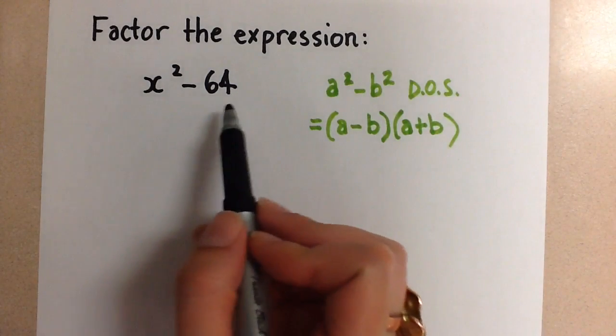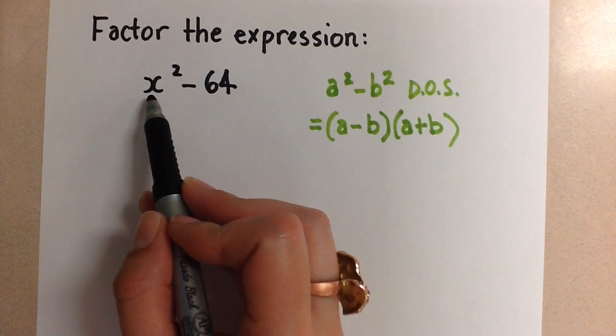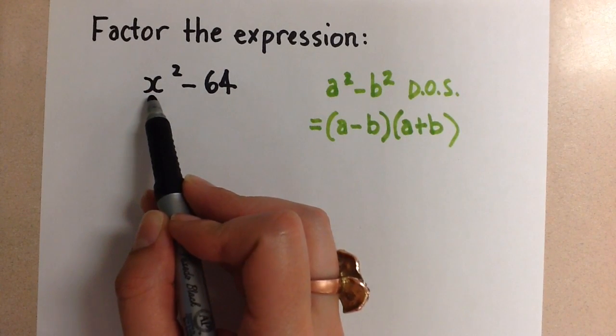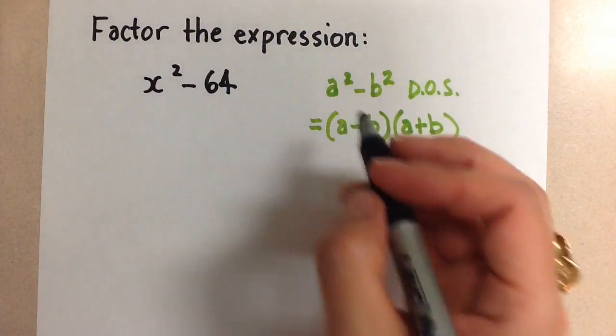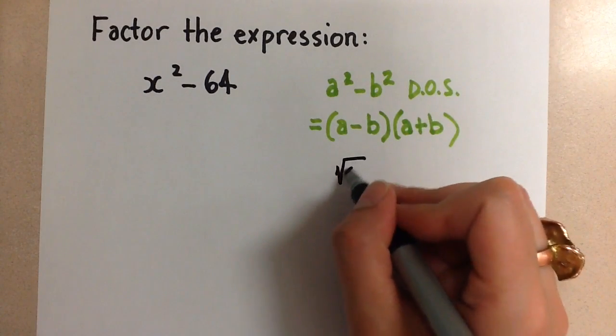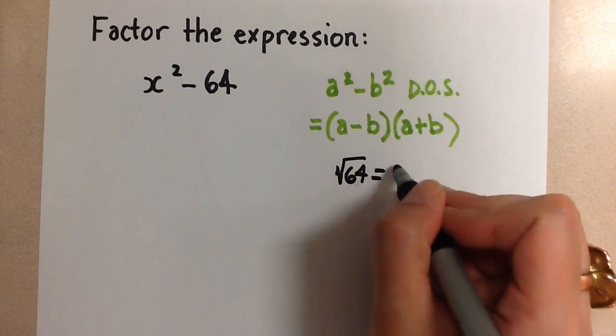So again, we notice that it's a difference of squares by looking at the fact that this is a perfect square minus a perfect square. And so here we know that the square root of 64 is equal to 8,